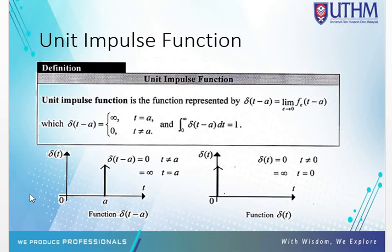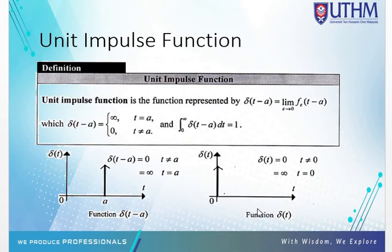Here is an example for the delta function. For delta(t minus a), when t is not equal to a it equals 0, and when t equals a it equals infinity. For the special case delta(t), when t equals 0 it equals infinity, and when t is not equal to 0 it equals 0.